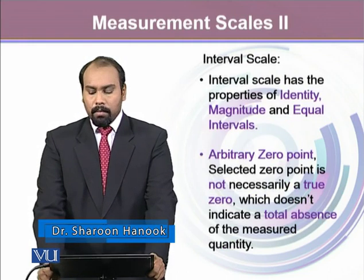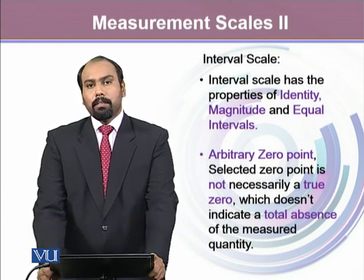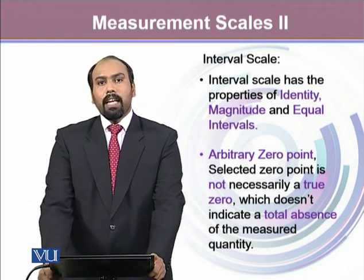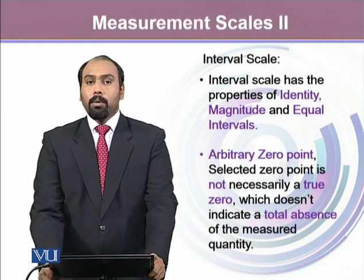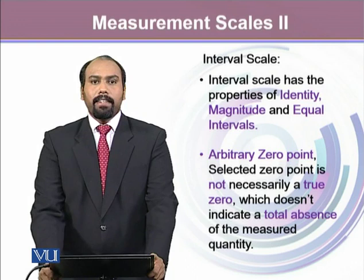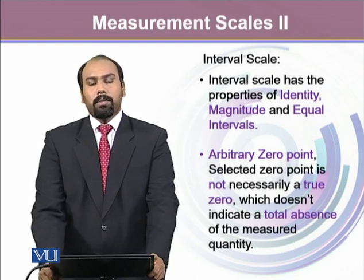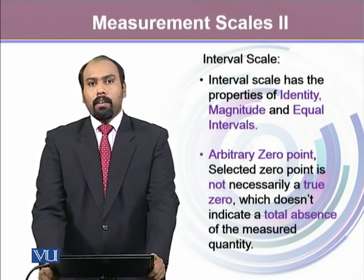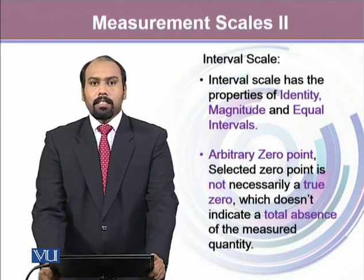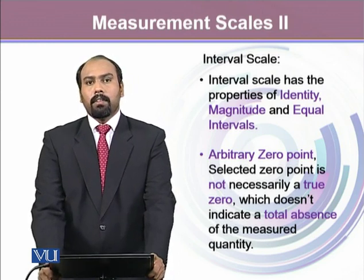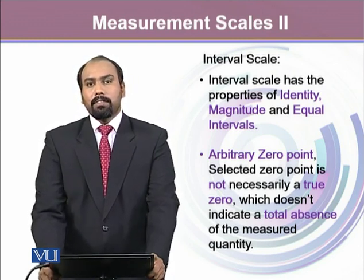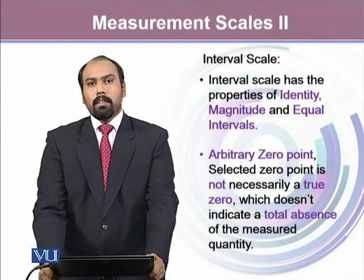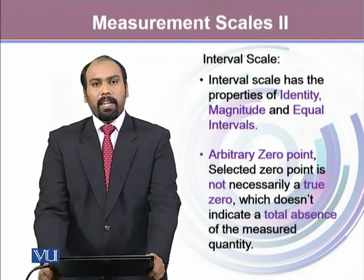In an interval scale, there is an arbitrary zero point. When we say arbitrary zero point, it means that if the value of a variable goes to zero, it doesn't mean that it is actual zero. In common understanding, whenever something goes to zero, we say it's real zero — that it's not there. But in an interval scale, when a variable goes to zero, it does not represent total absence. Something still exists at zero. That's why it's an arbitrary zero.